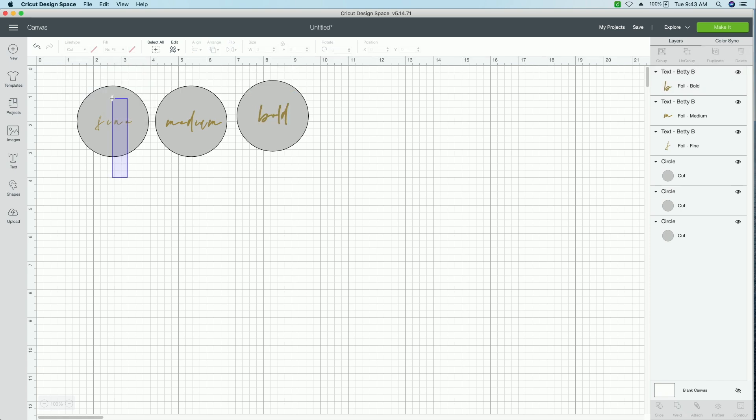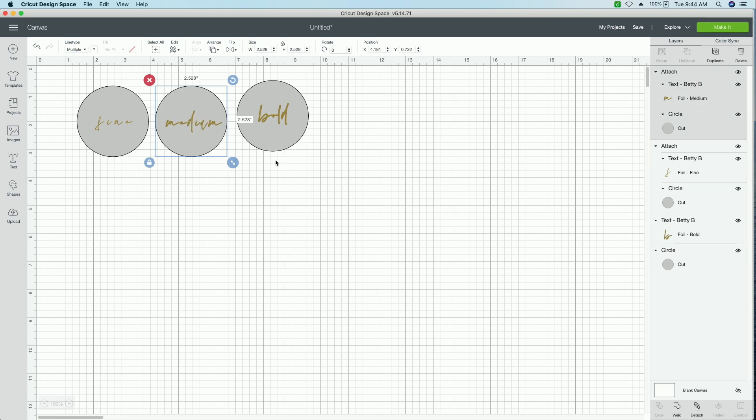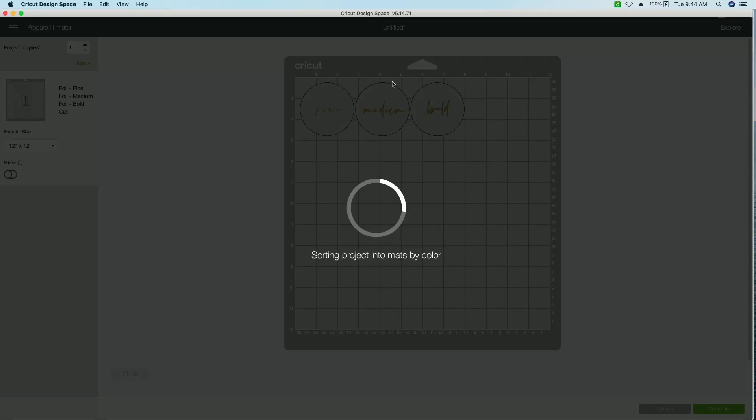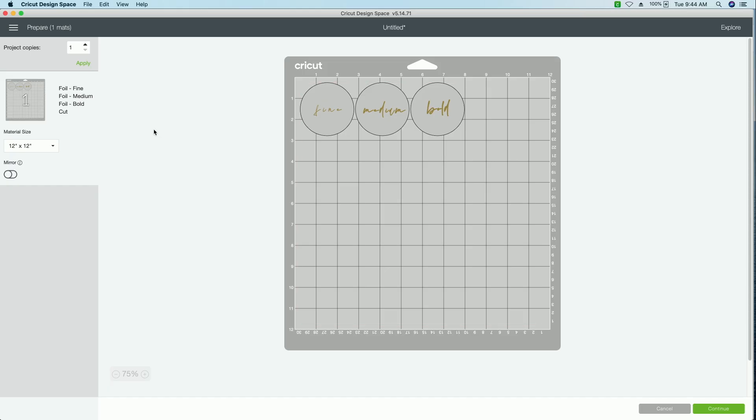And then all we need to do now is attach each of these text boxes to our circle. So I have both of the layers selected and I'm pressing attach one last time here, pressing attached, and then I am just going to press make it. And you can see on our map where these line up. So then what you're going to want to do is place your cardstock on your map. And then you're going to want to place your foil right over basically the middle of the circles where the foil is going to be. So we're going to load our mat and I'll show you what it looks like when I'm finished loading it.